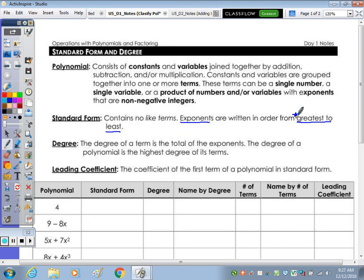Degree. The degree of a term is the total of the exponents. So when you're looking at the degree of a single term, we add the exponents. The degree of a polynomial is the highest degree of its terms. Our leading coefficient is the coefficient of the first term of a polynomial in standard form.